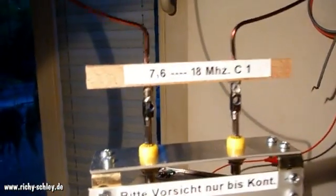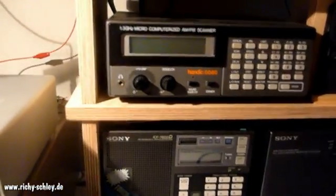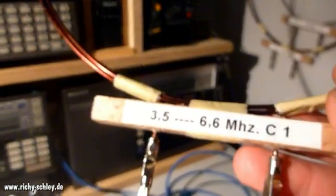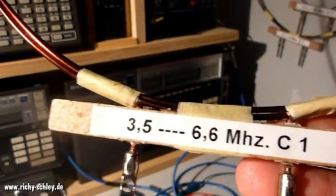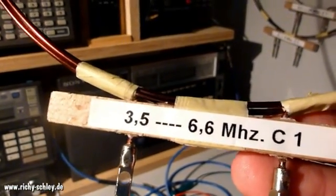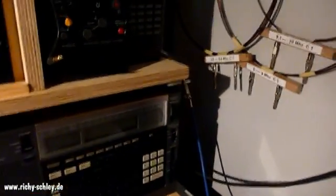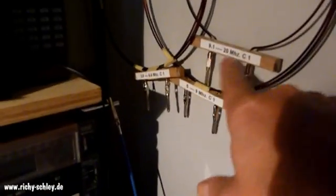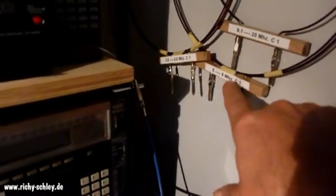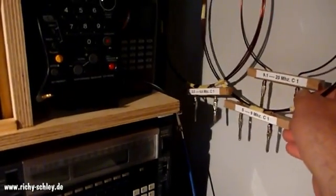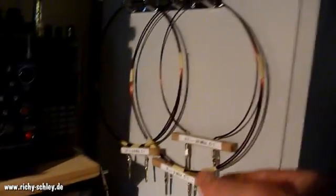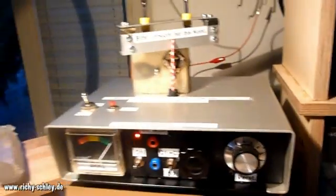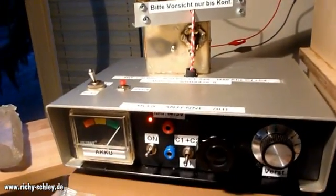This is from 7.6 to 18 megahertz, and you have also 3.5, which is the lowest short wave frequency, to 6.6, and 9.1 to 20, and 5 to 9. So you can use different antenna modules for different frequencies, and it works very nicely.